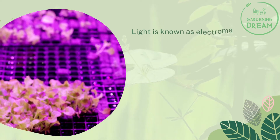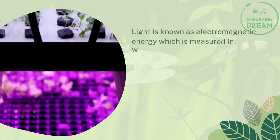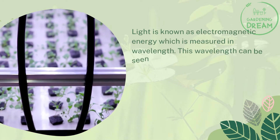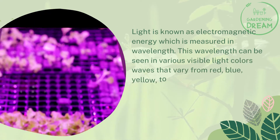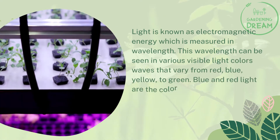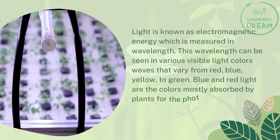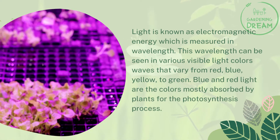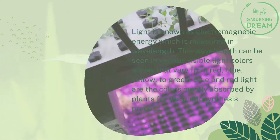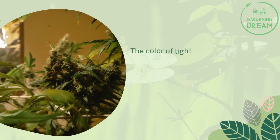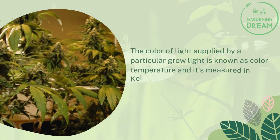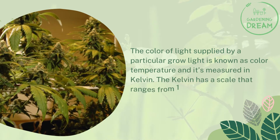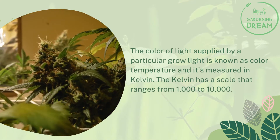Light is known as electromagnetic energy, which is measured in wavelength. This wavelength can be seen in various visible light colors — waves that vary from red, blue, yellow to green. Blue and red light are the colors mostly absorbed by plants for the photosynthesis process. The color of light supplied by a grow light is known as color temperature, and it's measured in Kelvin, with a scale that ranges from 1,000 to 10,000 Kelvin.